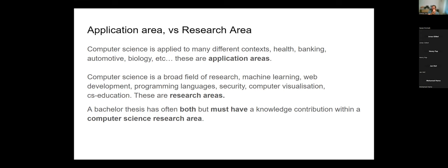Computer science is a broad field: machine learning, web development, programming languages, security, computer vision, networks, computer science education — all are research areas. If a company wants you to program an app, they probably want you to work on an application area. You should say: okay, we could develop this app, but we need to find a computer science research area problem within it. When you talked about app development, I tried to find something in software engineering research. When you mentioned the frontend-backend communication problem, we're approaching computer science.